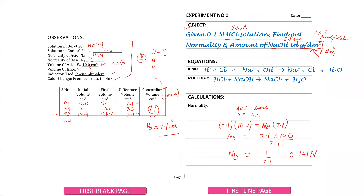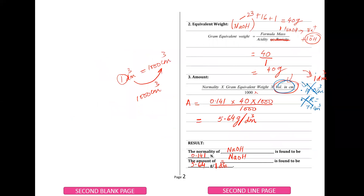If you want to put the volume in dm³ directly, you do not need to multiply or divide further. But if you keep the volume in cm³, you must divide by 1000. So the formula works either way — just ensure unit consistency. Convert the volume in cm³ by dividing by 1000 to get your final answer.